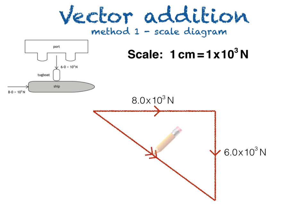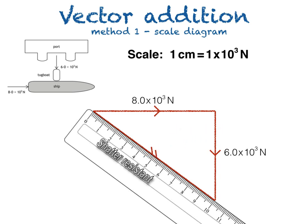To find the size of the resultant vector, we bring the ruler back in, and you can see that the line is 10 cm long. So using our scale, the resultant force is 10 × (1 × 10³) = 10 × 10³ N, or 1.0 × 10⁴ N.